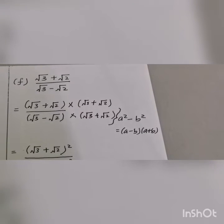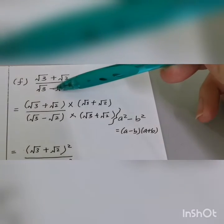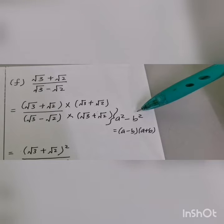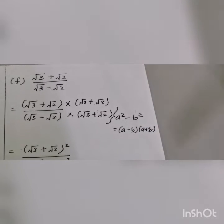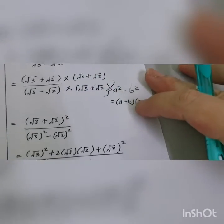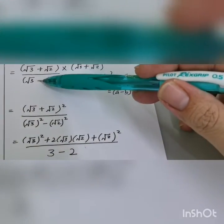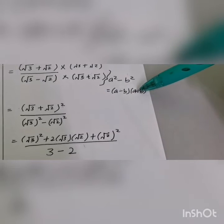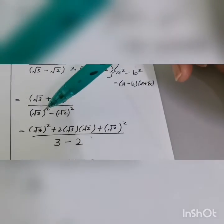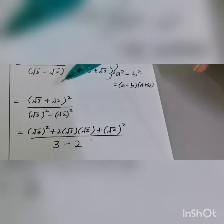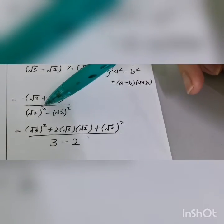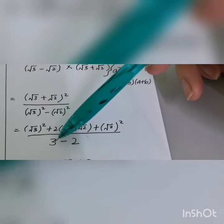Continuing — we need to rationalize a negative denominator. When the denominator is negative, we multiply top and bottom by the positive version. We use the concept a² minus b² equals (a+b)(a-b). Multiplying: one is negative, one is positive — that's the same concept. This gives a² minus b², where a is square root of 3 and b is square root of 2. So square root of 3 squared becomes 3, and square root of 2 squared becomes 2, giving 3 minus 2 equals 1.